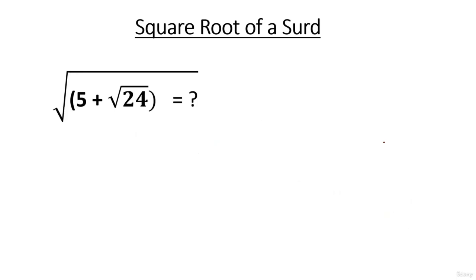Let's find the square root of 5 plus √24. First, √24 is written in simplified surd form: √24 = √(4×6) = 2√6. So the question becomes: find the square root of 5 plus 2√6.